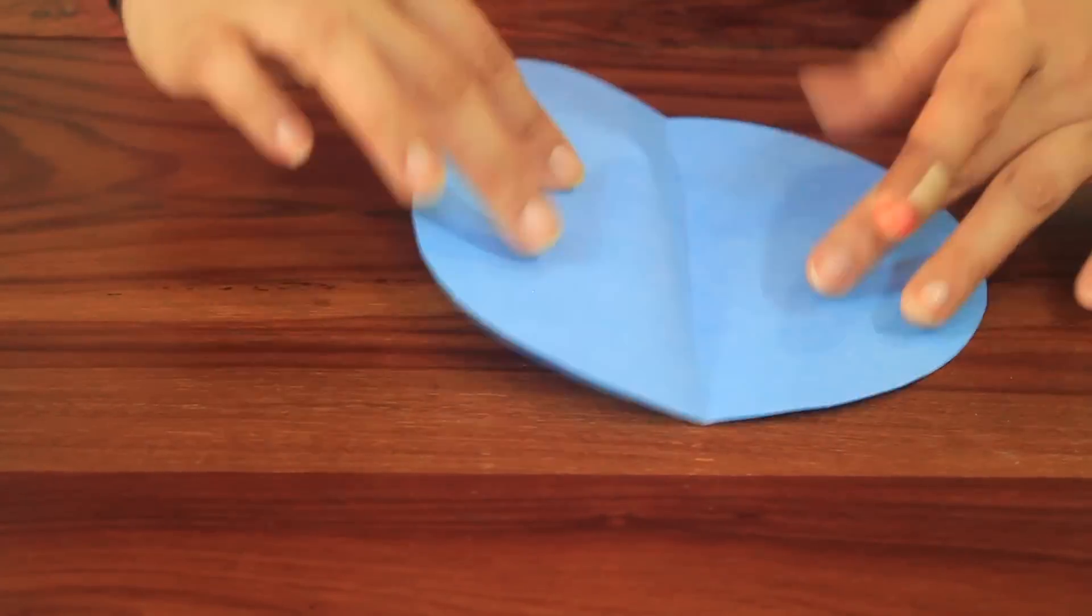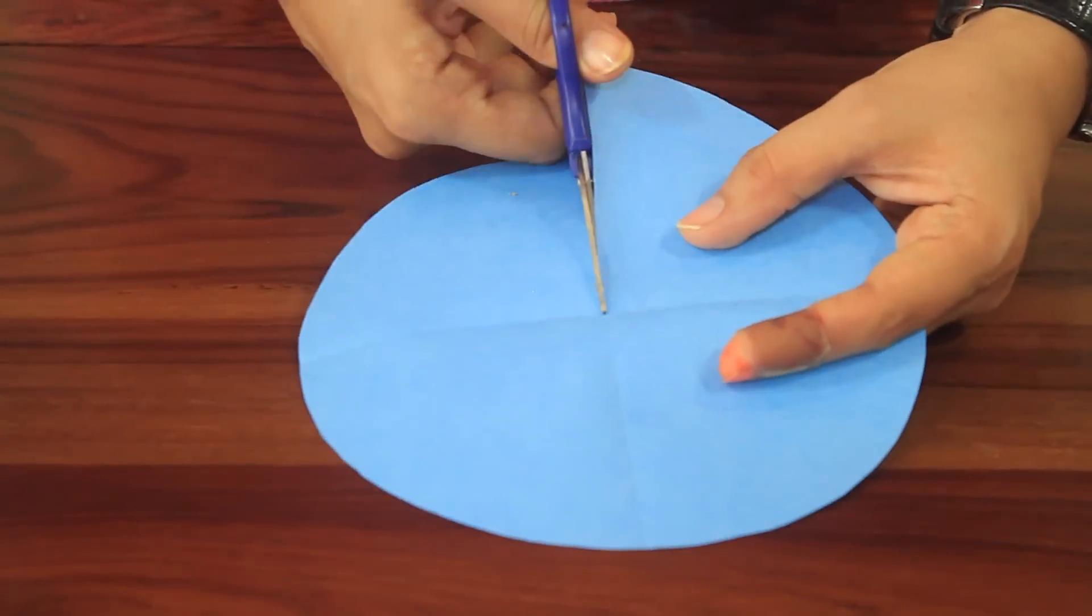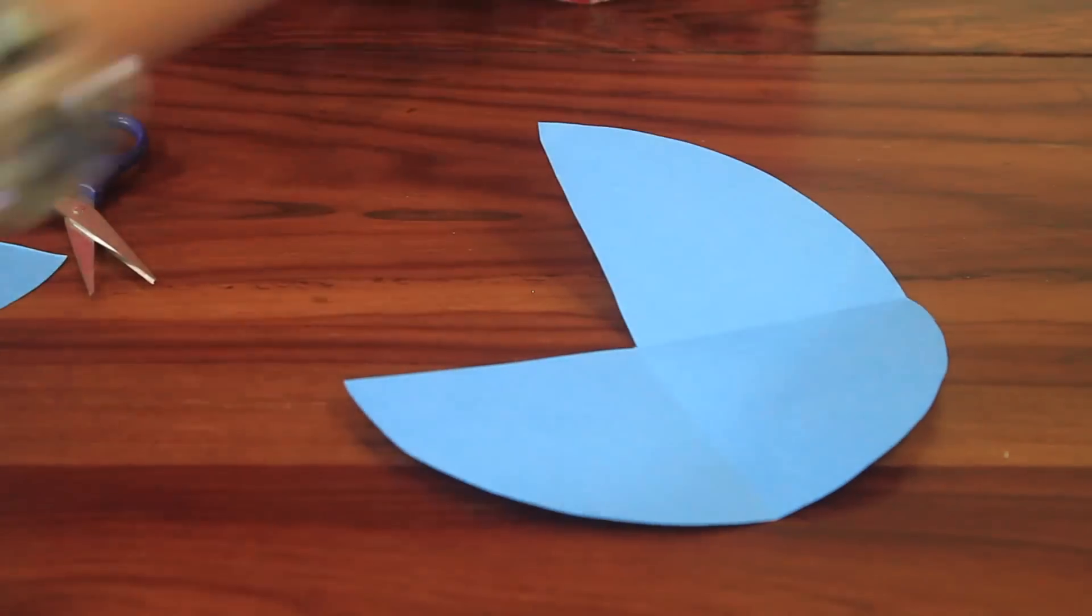Cut out 4 circles the same size as the mount board base. Fold and mark 4 quarters in all the circles, then cut out a quarter part from each.